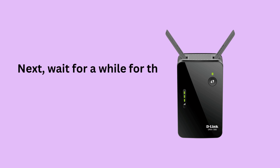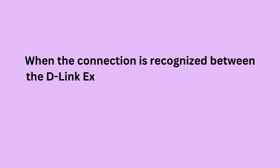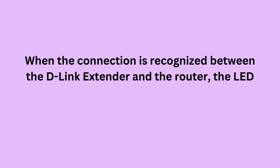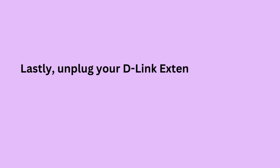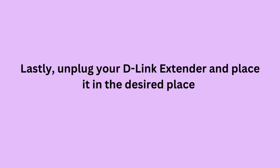Next, wait for a while for the LED to turn green. When the connection is recognized between the D-Link extender and the router, the LED will automatically turn solid green. Lastly, unplug your D-Link extender and place it in the desired location.